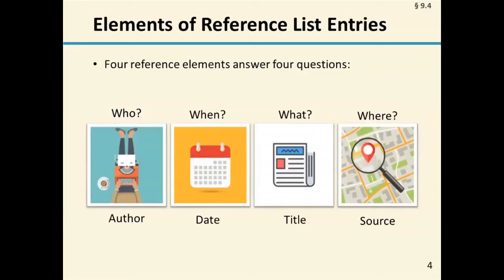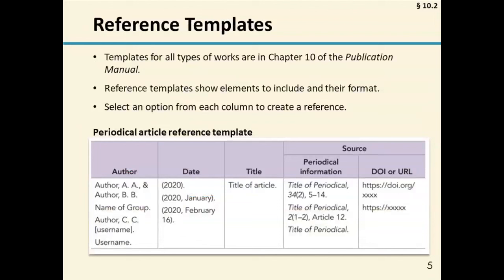You'll be hearing us talk a lot about the elements of a reference in this presentation. Those are the four pieces in a reference that answer the questions who, when, what, and where. That's author, date, title, and source. To answer those four questions, we'll be showing journal articles, books, reports, and web pages, but the basic principles cover literally anything you want to cite.